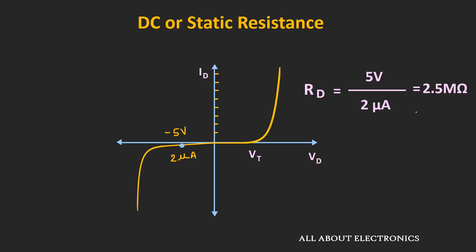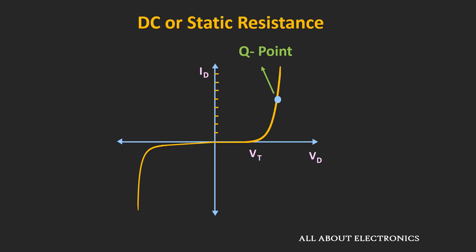Whenever a DC voltage is applied to the diode, by knowing the operating voltage and current we can easily find the DC or static resistance. On the diode curve, the operating condition can be represented by the Q-point, which represents the operating voltage and current for the given diode. So far, we have learned how to find the DC resistance when the applied voltage is a DC voltage.